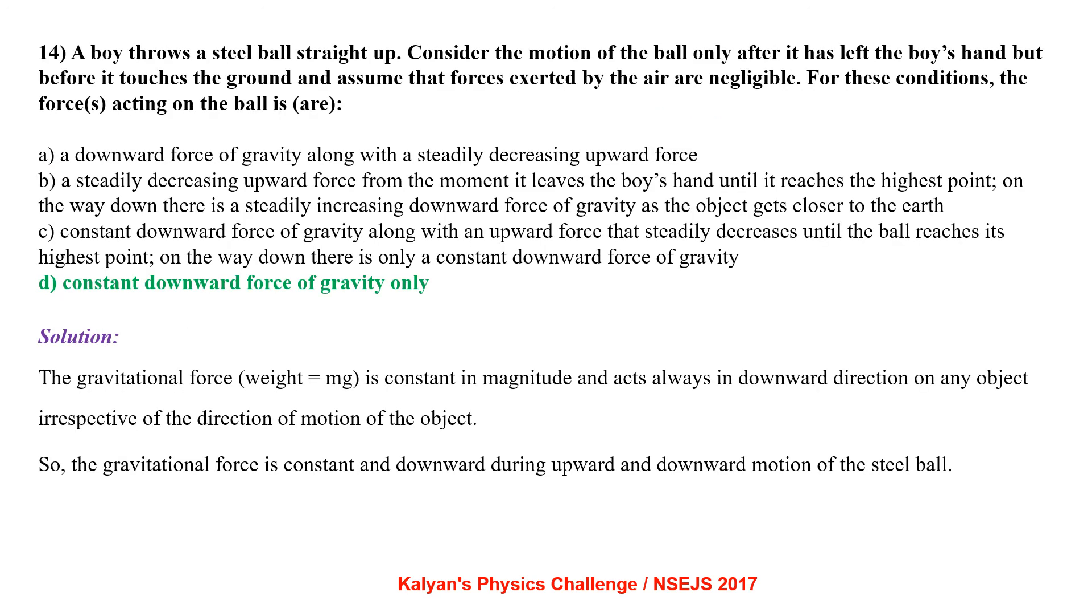A boy throws a steel ball straight up. Consider the motion of the ball only after it has left the boy's hands but before it touches the ground and assume that the forces exerted by the air are negligible. For these conditions, the forces acting on the ball are a downward force of gravity along with a steadily decreasing upward force. A steadily decreasing upward force from the moment it leaves the boy's hand until it reaches the highest point. On the way down, there is a steadily increasing downward force of gravity as the object gets closer to the earth.